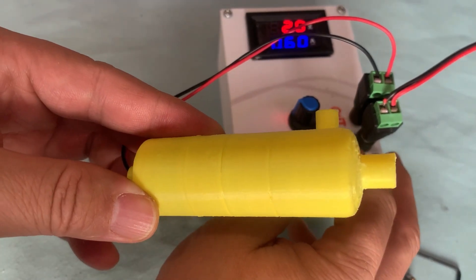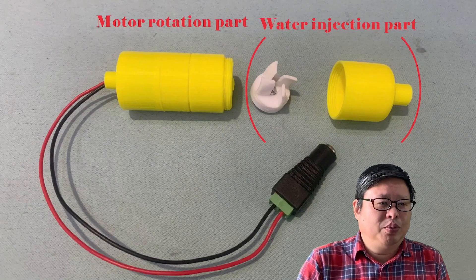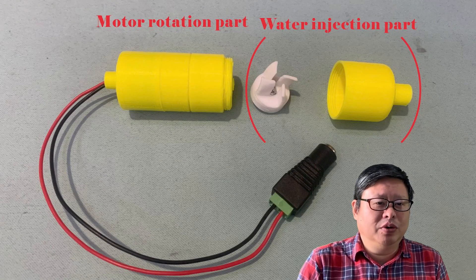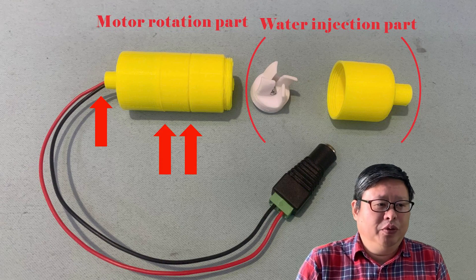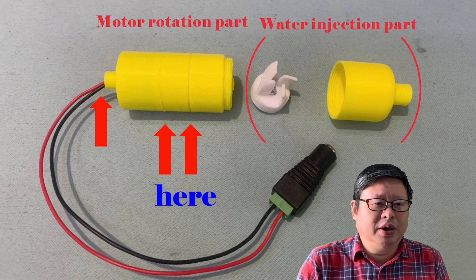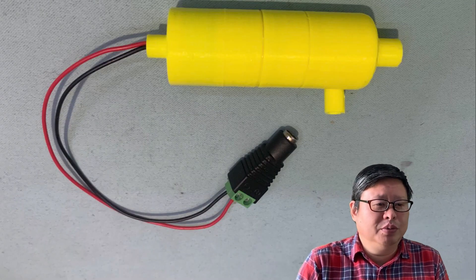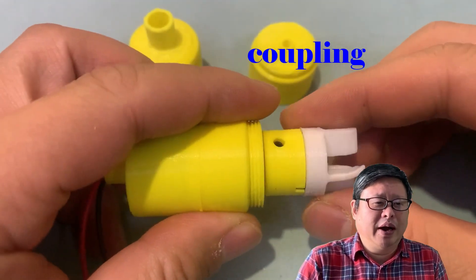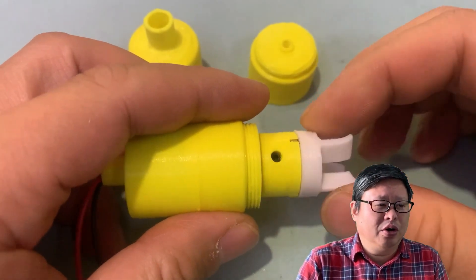The concept is simple and clear. Separate the motor rotation part from the water injection part. If we seal the motor chamber completely, it is 100% waterproof. Use the magnetic coupling mechanism to transfer the motor torque to the impeller.